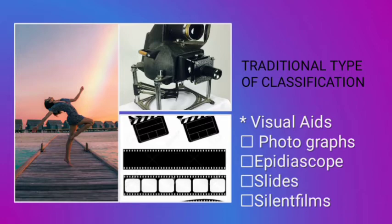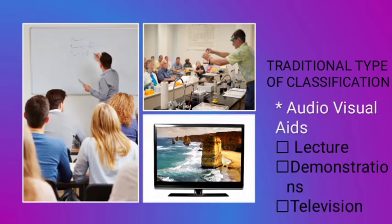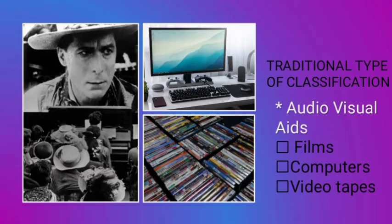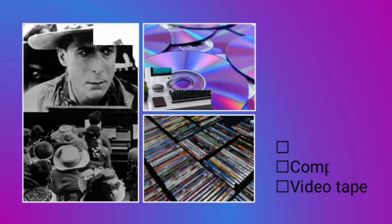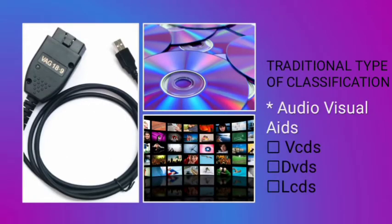And now let us proceed to the audiovisual aids. The examples are lecture, demonstrations, televisions, films, computers, videotapes, VCDs, DVDs, and LCDs. Those are the examples of audiovisual aids in the traditional type of classification.